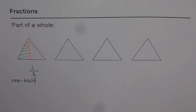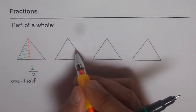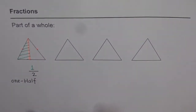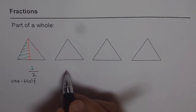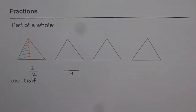Now, can you divide a triangle into three equal parts? That is not easy. If I draw a line here and there, it is more than three. How can you divide a triangle into three equal parts? I want the denominator to be three.